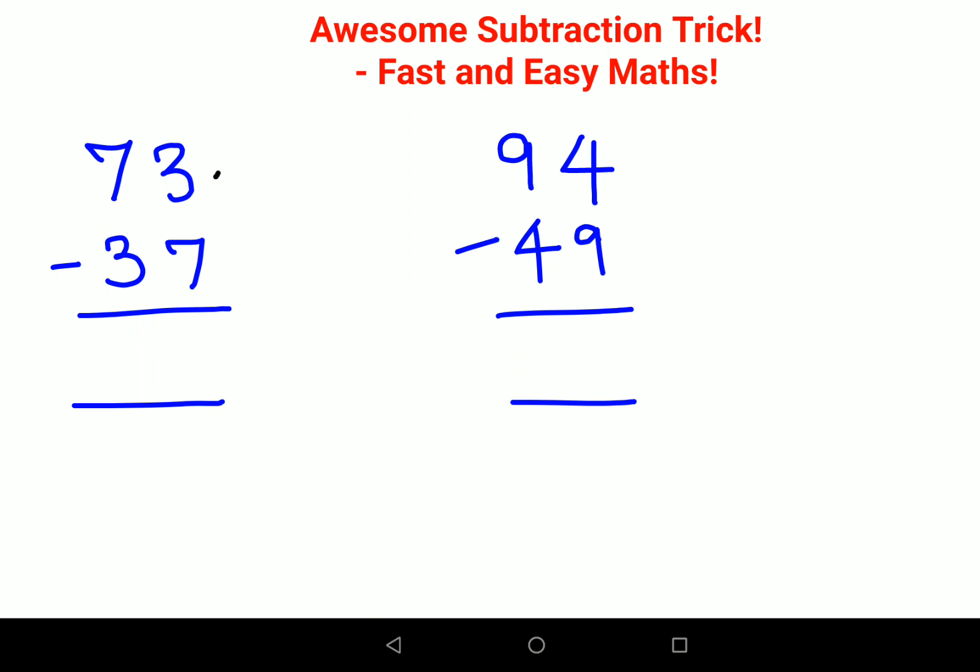All you have to do is subtract the units digits. So 7 taken from 3 gets you what? The answer is 4. To get your final answer, you just multiply this 4 by 9. So the answer is 36.